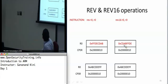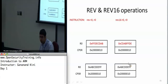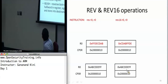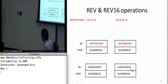Similarly, REV16 takes bytes 0xAB, 0xCD and reverses them within the lower half-word, then takes 0xFF, 0xDE and reverses them within the upper half-word. REVSH just takes the lower two bytes and flips those two.